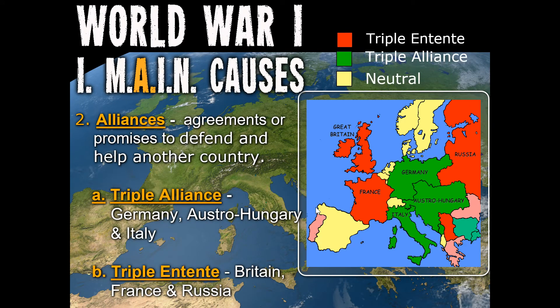The alliances are those agreements between countries — they pledged to defend one another. These alliances started in Bismarck's day. The Triple Alliance started as a reaction to France longing for vengeance after its defeat in the Franco-Prussian War. Bismarck signed treaties with other powers, understanding that France would not attack Germany without help. He formed this Triple Alliance with Italy and Austria-Hungary.